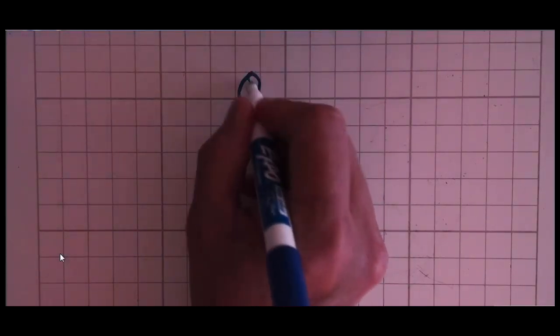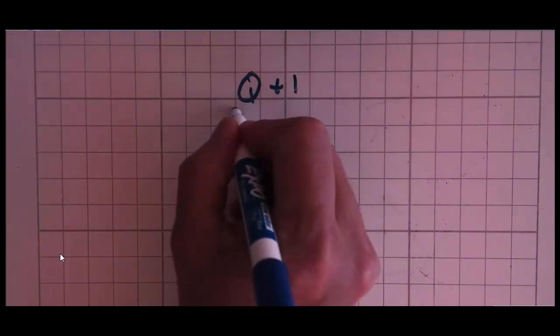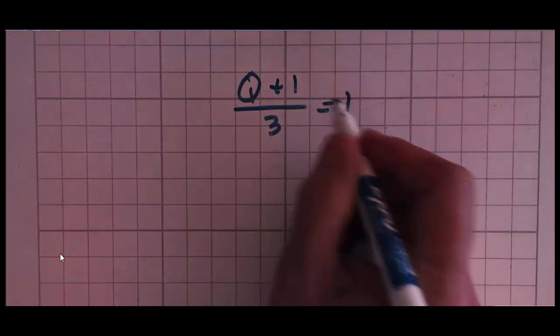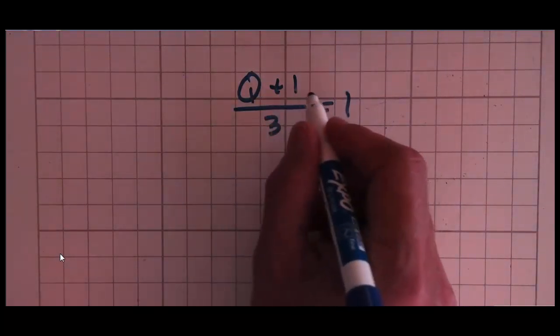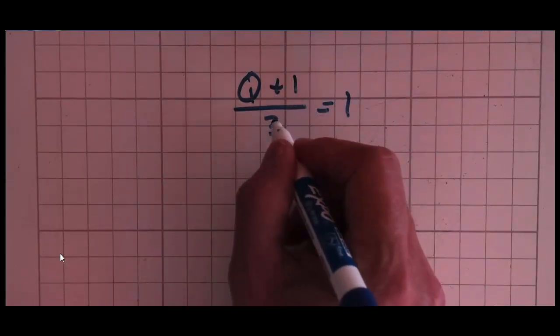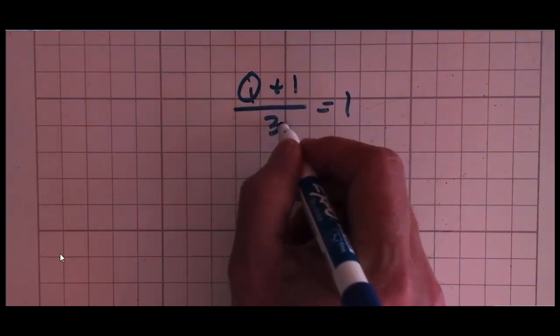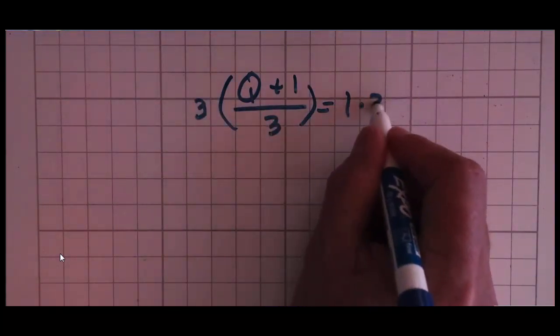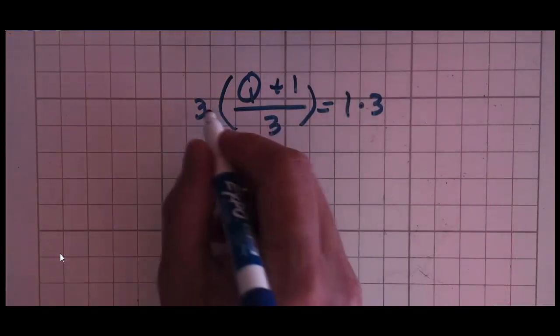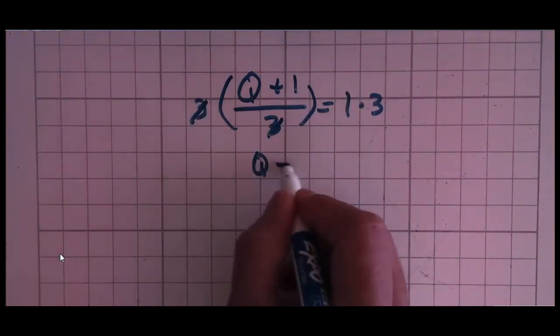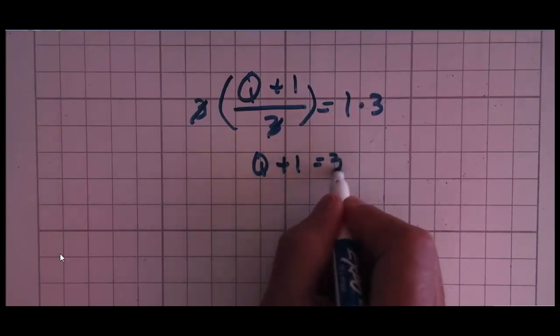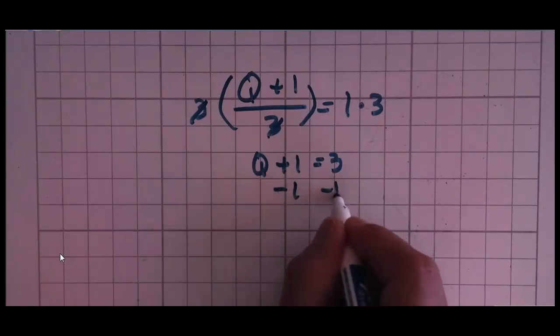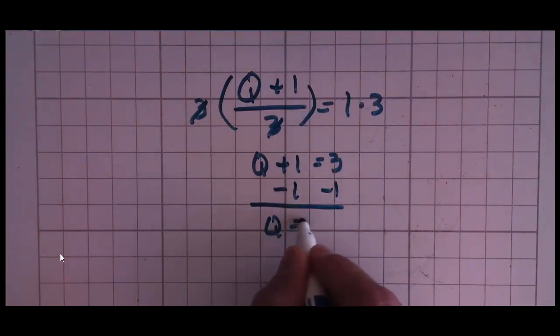So here's another problem: (q+1)/3 = 1. Now we want to get the q by itself and we're used to moving this away, but before we do that, since the whole thing is divided by 3, we have to multiply both sides by 3. That's what makes this one an advanced equation because now you end up with q + 1 = 3, and that's an easy problem to solve. Subtract 1 from both sides, q = 2.